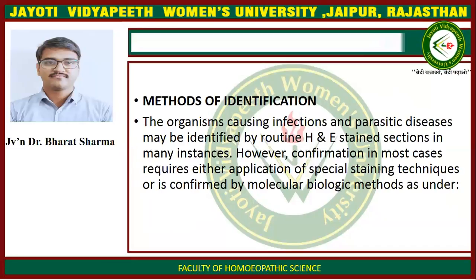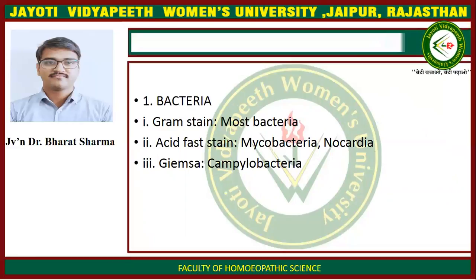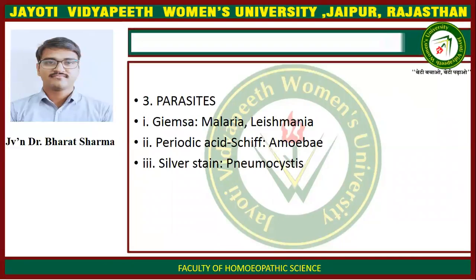Method of identification. The organisms causing infectious and parasitic disease may be identified by routine H&E stain sections in many instances. However, confirmation in most cases requires either application of a special staining technique or molecular biological methods. For bacteria: Gram staining for most bacteria; acid-fast staining for Mycobacteria or Nocardia; and Giemsa stain for Campylobacter. For fungi: silver stain for most fungi; periodic acid-Schiff for most fungi; and mucicarmine for Cryptococcus. For parasites: Giemsa staining for malaria and Leishmania; periodic acid-Schiff for amoeba; and silver stain for Pneumocystis.